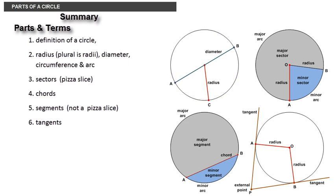The fundamental parts of a circle such as radius, plural is radii, diameter, circumference and arc.